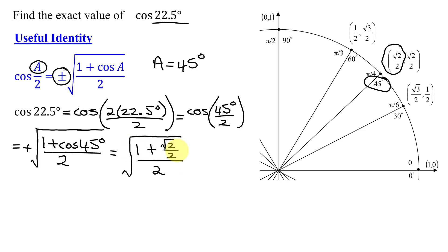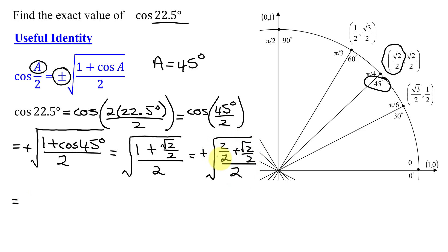Now all I have to do is simplify this. I'm going to have to add fractions in the numerator. So 1, I'm going to have to turn into a fraction that has a denominator of 2. So 1 is equal to 2 over 2, plus the square root of 2 over 2, all divided by 2. Since I have a fraction in the numerator, I want my denominator to be a fraction, so I'm just going to divide it by 1.